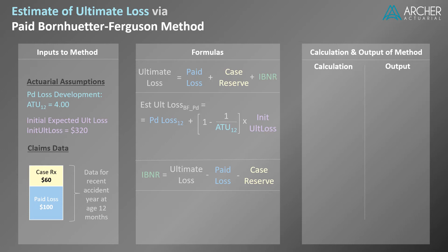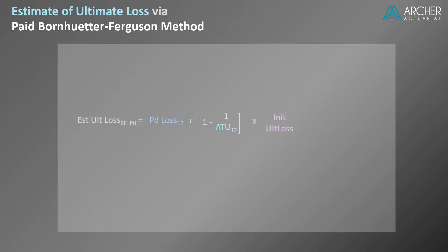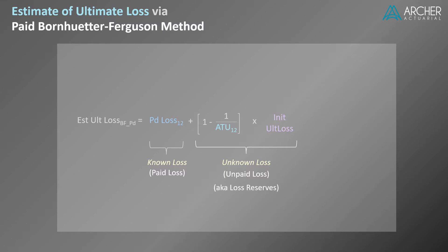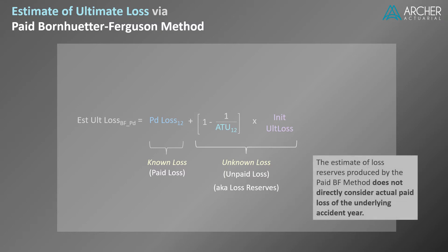Let's look at this formula more closely. Estimated ultimate loss via the BF method can be broken into two main sections: known loss and unknown loss. More specifically, for the paid version of the BF method, the sections equal paid and unpaid loss. You may recall that unpaid loss is just another name for loss reserves. This breakout leads to an interesting characteristic of the paid BF method: the estimate of loss reserves produced by the method does not directly consider the actual paid loss of the underlying accident year.